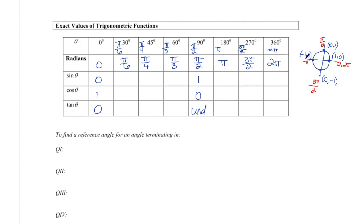For pi, I'm looking at the pi coordinate, which is (-1, 0). So sine of pi is zero, cosine of pi is negative one, and tan of pi is zero divided by negative one, which is zero. For three pi over two, I'm looking at the coordinates from three pi over two. And lastly, two pi — this is going to be the same as zero: sine zero, cosine one, tan zero.